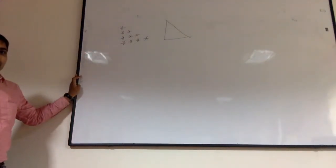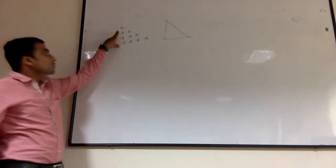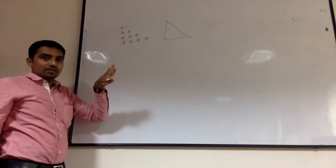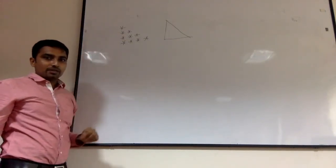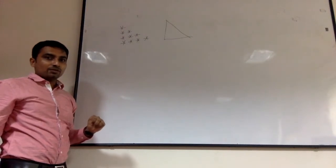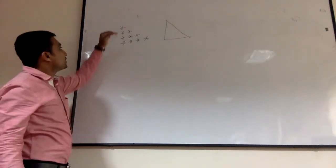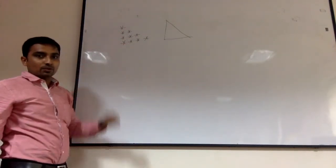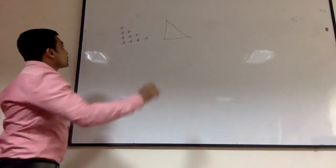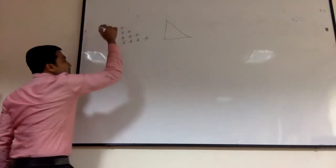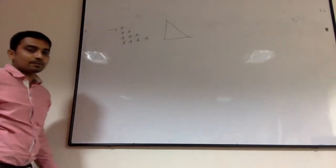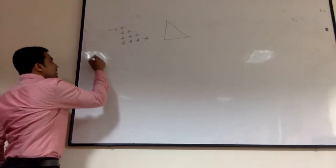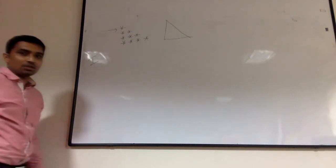When you look at it as a whole it looks quite complex. So what we are going to do is divide it into multiple rows. First I am going to take the first row and write the logic for it.